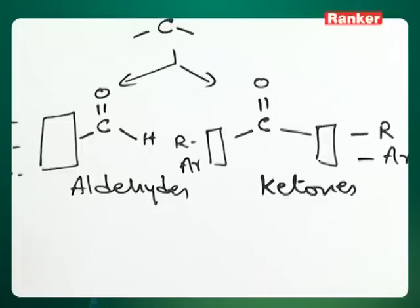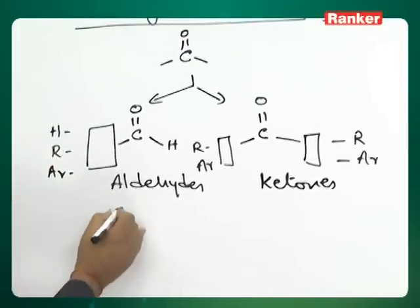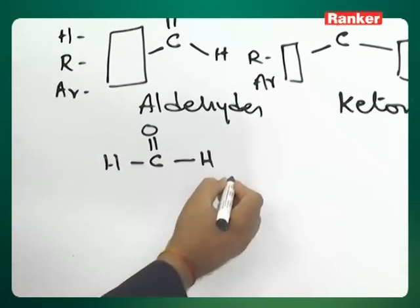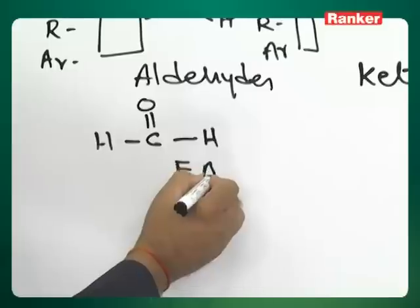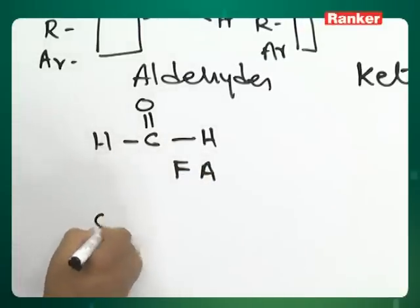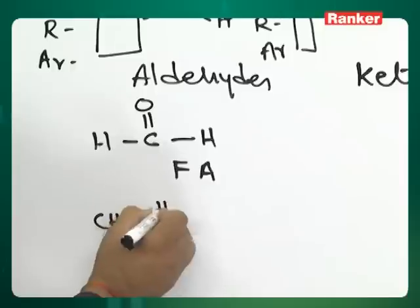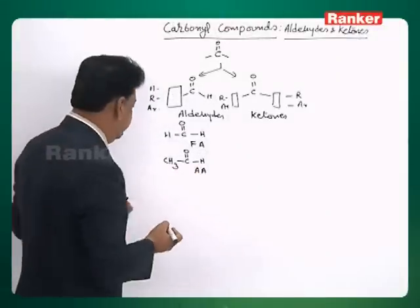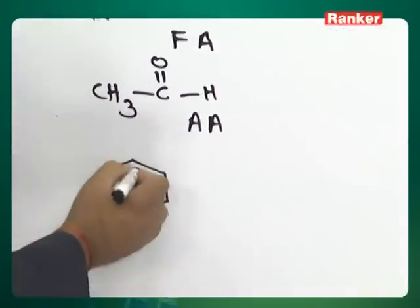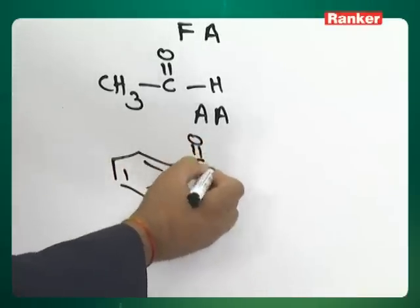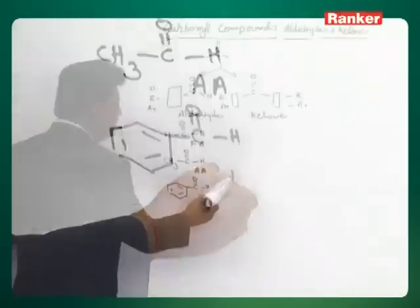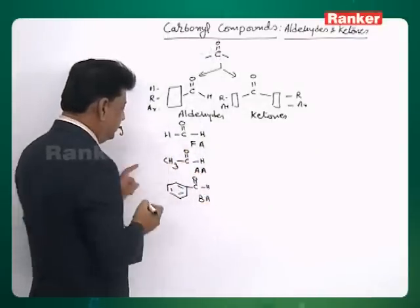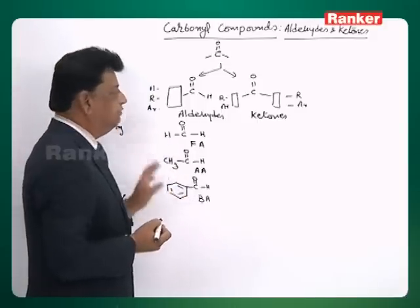Let us take some examples. There are three common, well-known aldehydes. The first is called formaldehyde, shortly abbreviated as FA. If the smallest alkyl group CH3 is on one side, it is called acetaldehyde — the common name is acetaldehyde. And one benzene with aldehyde is called benzaldehyde, abbreviated as BA. These are three very popular aldehydes.